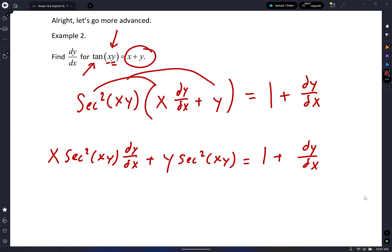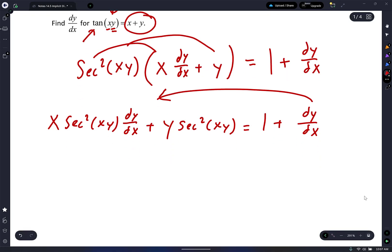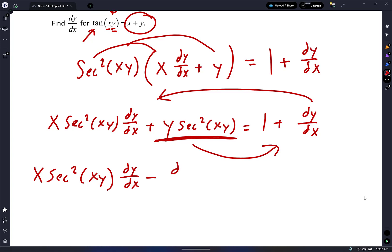I usually like to have my dy/dx's in the back, but if you wanted to put it in the front, it's not a big deal. I'm going to move the dy/dx on the right-hand side to the left, so that's going to turn to a minus. And I'm going to move this product to the right. So I have x secant² xy dy/dx minus dy/dx equals 1 minus y secant² xy.